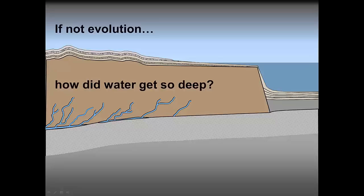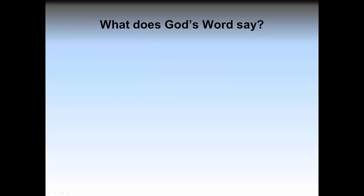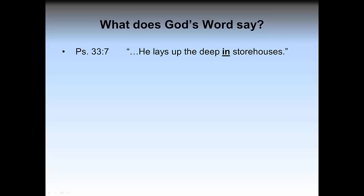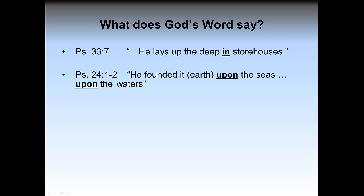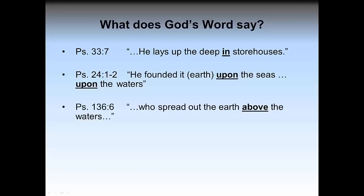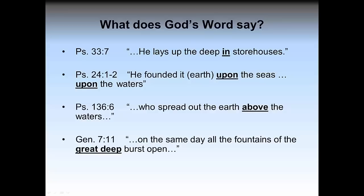Hydroplate theory asks the question: if evolution theory does not predict deep water, then how else did the water get so deep under all the continents? It is interesting to note that the Bible indicates in several places that water was and is under the Earth. Psalms repeatedly indicates this: 'The deep is in storehouses,' 'the Earth is founded upon the seas and upon the waters,' 'the Earth is spread out above the waters.' Most telling is the opening action of the flood recorded in Genesis 7 verse 11. The Bible strongly indicates large amounts of water were originally deep under the Earth. The hydroplate theory uses these biblical descriptions in combination with many real-world observations to derive its starting assumption about the original layout of Earth, which is radically different than what we see today and certainly much different than what uniformitarian theory proposes.